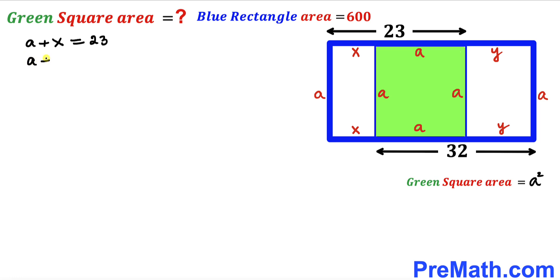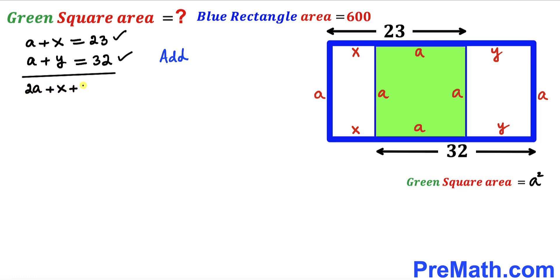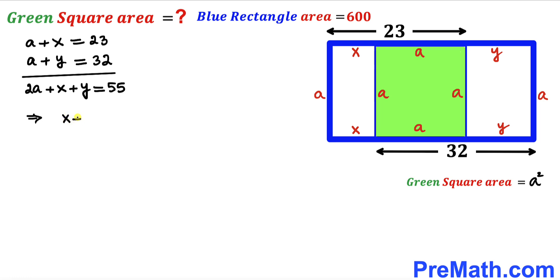Now we add these two equations together: 2a + x + y = 55. Moving 2a to the other side, we get x + y = 55 − 2a. We'll label this as equation number 1.